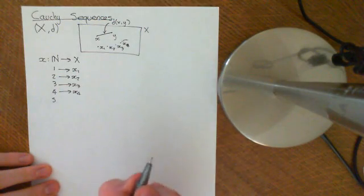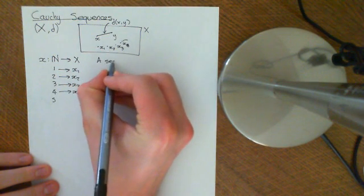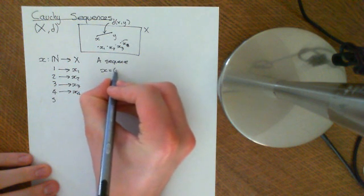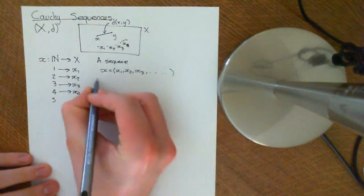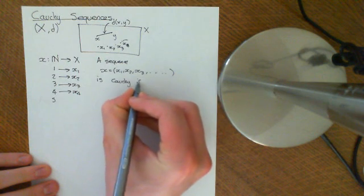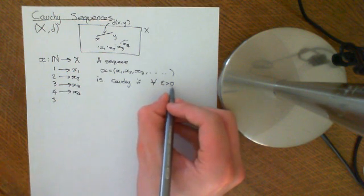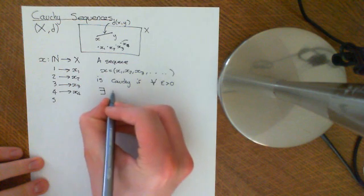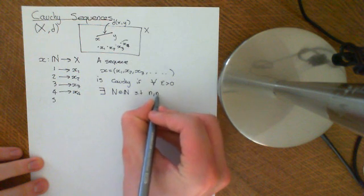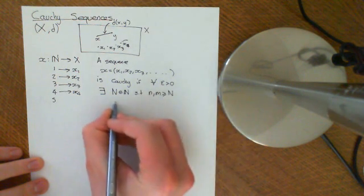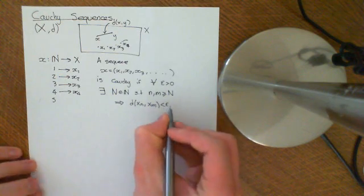The concept of a Cauchy sequence is that the terms in the sequence are getting closer and closer together. A sequence X = (X1, X2, X3, ...) is Cauchy if, for all epsilon greater than 0, there exists a big N which is an element of the natural numbers, such that if little n and little m are greater than or equal to big N, then the distance between X_n and X_m is less than epsilon.